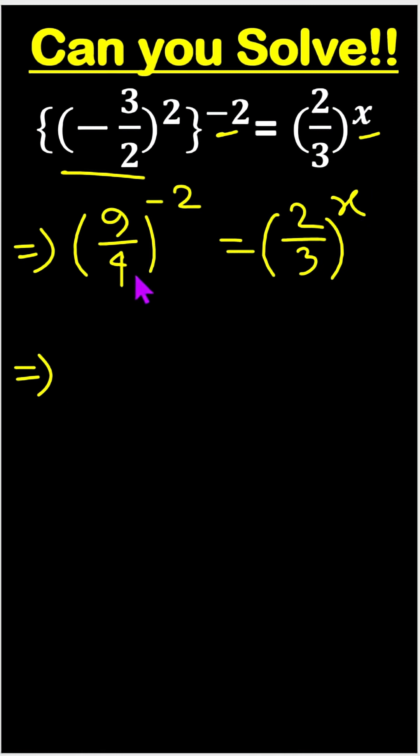So, 9 by 4 to the power minus 2, it is a negative exponent. This one we can write 4 by 9 whole square equals to here 2 by 3 whole to the power x.